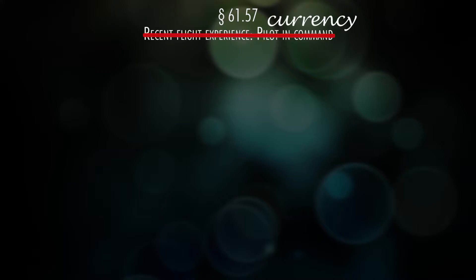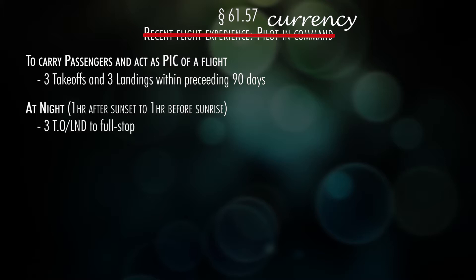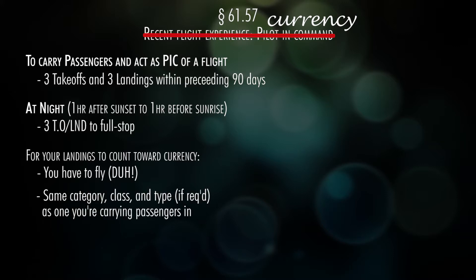Part 61.57 covers recent flight experience for the pilot-in-command, or currency. Once you get your private pilot certificate, you're free to rent or fly any airplane you're certified for solo. However, if you want to carry passengers, you have to perform at least three takeoffs and landings within the preceding 90 days. For night passengers — from one hour after sunset to one hour before sunrise — those three takeoffs and landings within 90 days must be to a full stop. You must be the sole manipulator of the controls, and in the same category, class, and type if required.